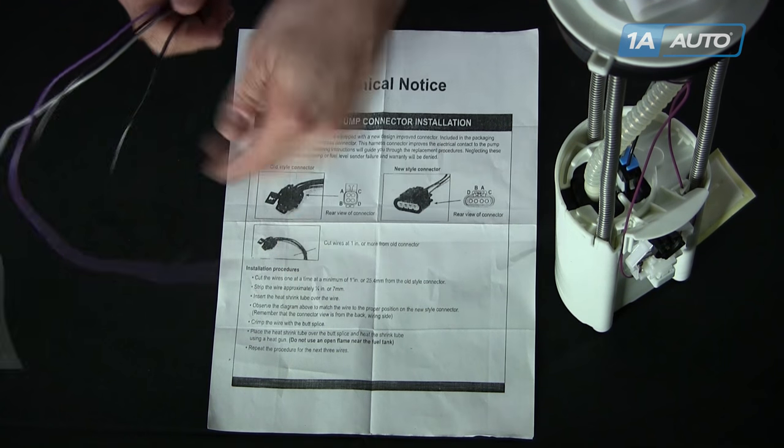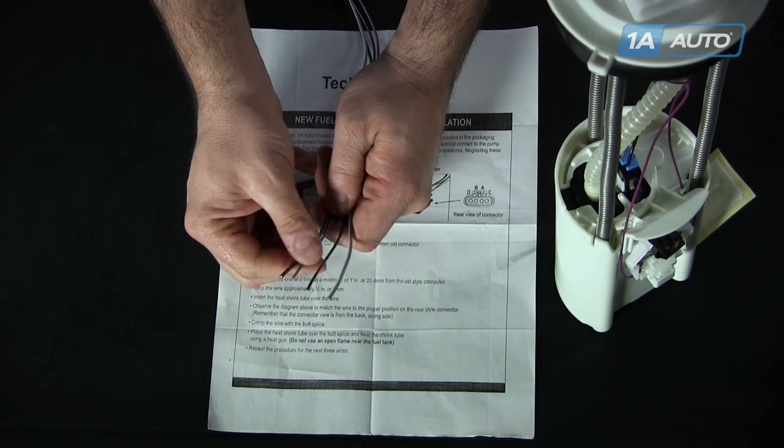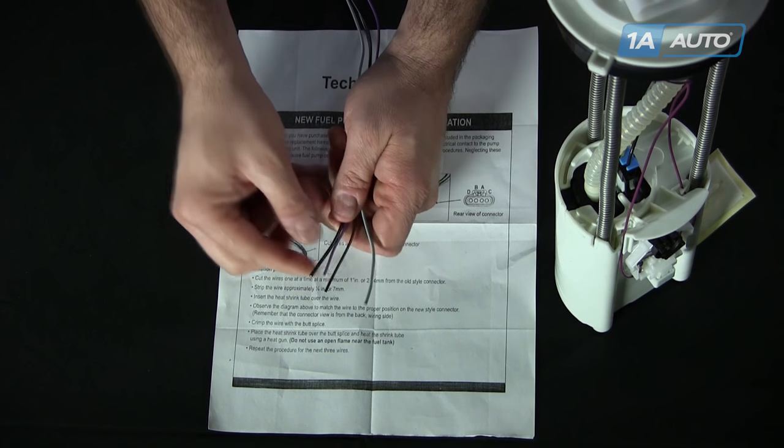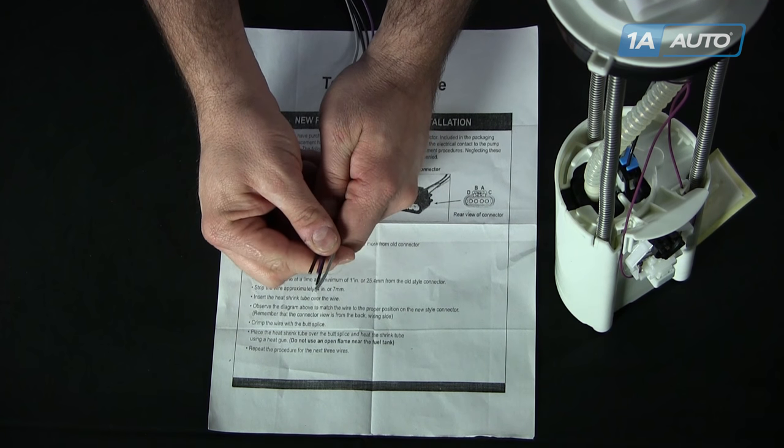It gives you all the details on how to splice off the end of these connectors. You can solder or crimp them together and use heat shrink tubing to seal off the ends of those connectors.